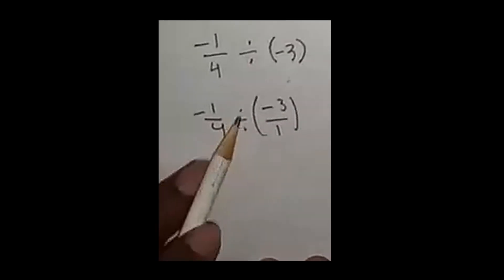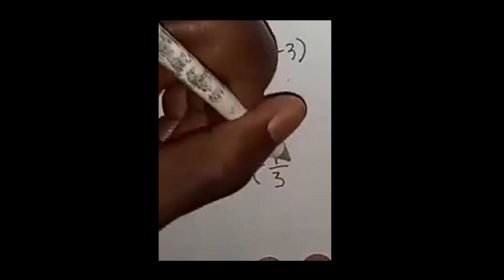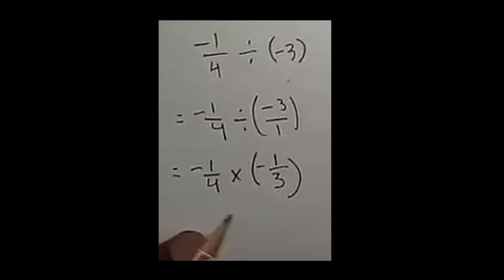Same thing. Now we can keep change flip. Now all that's left to do is multiply by brute force. Negative negative, we multiply it as positive. 1 times 1 is 1, 4 times 3 is 12. 1 over 12.